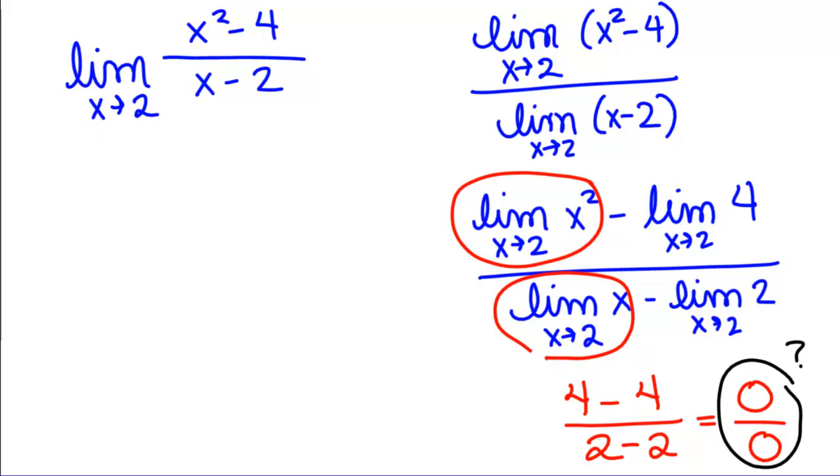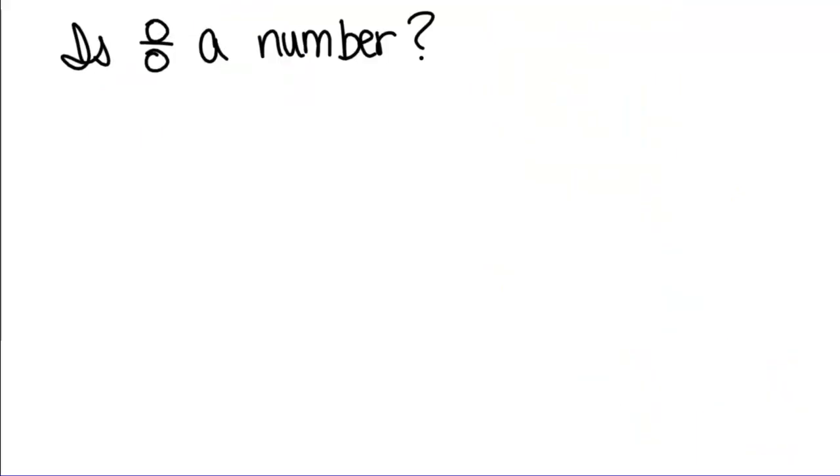First of all, is 0 over 0 a number? The answer is no. We can't divide by 0, right? That's not a number.